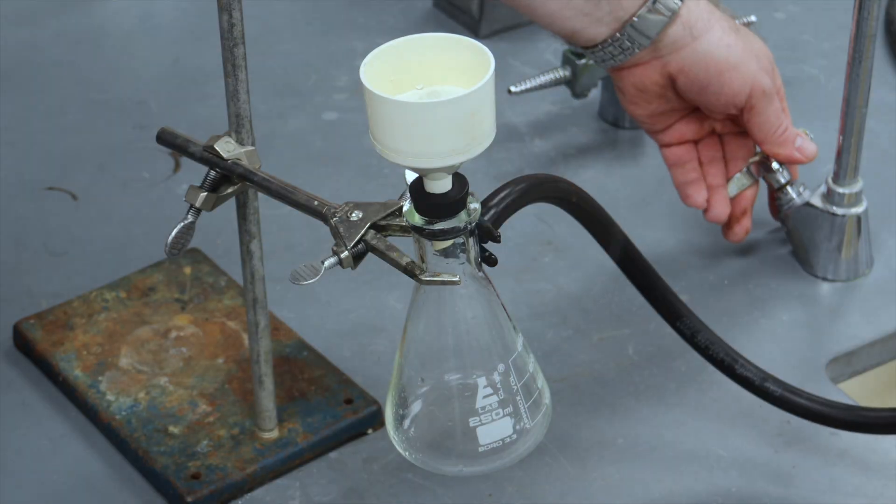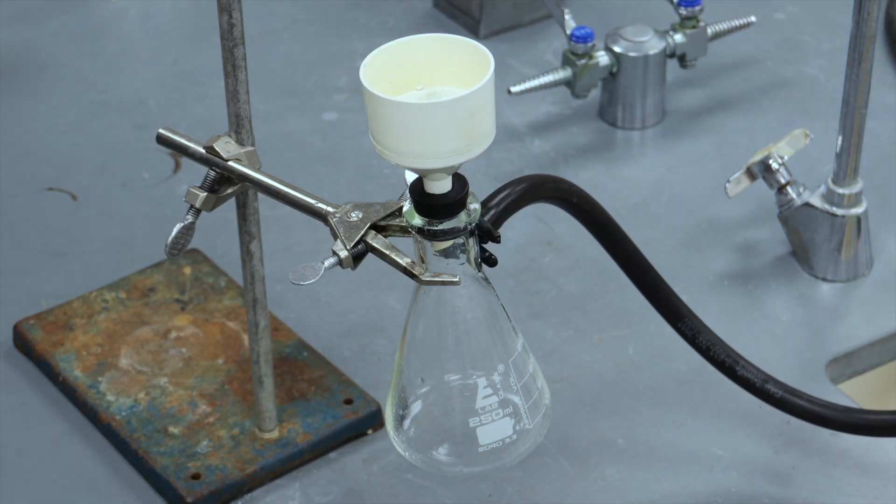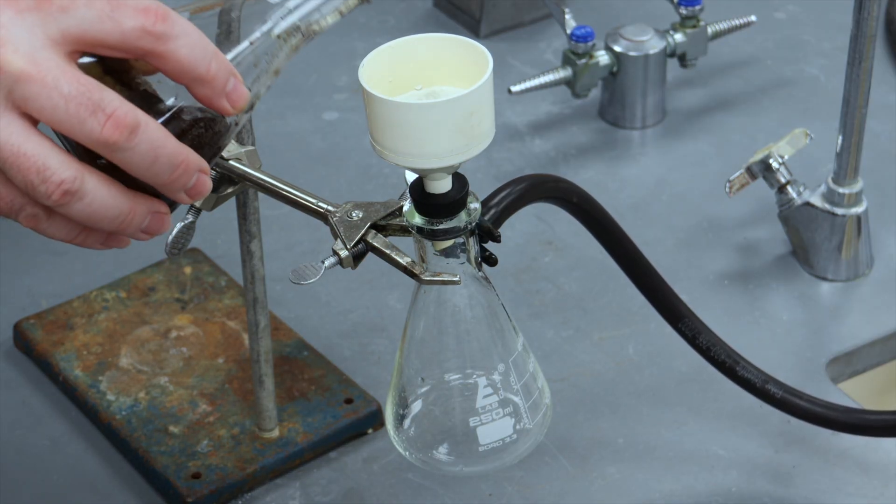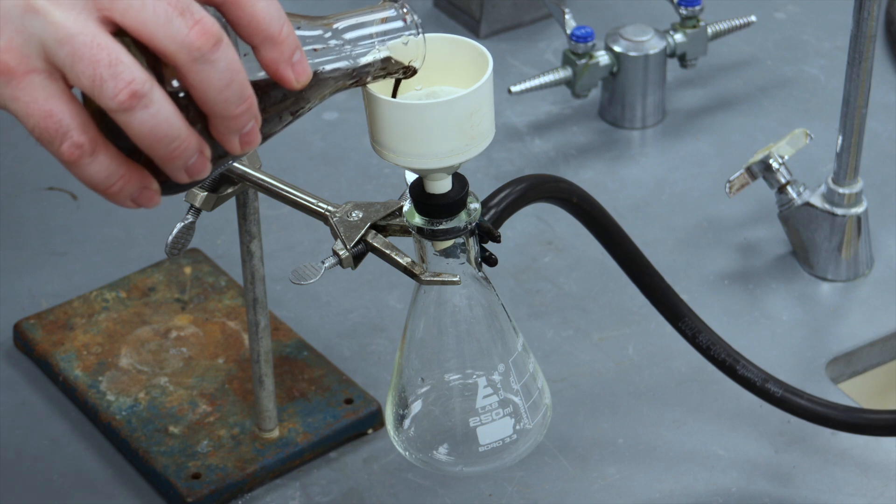Then, before you do your filtration, empty the vacuum flask of any solvent you collected. There shouldn't be any sea light in that liquid. Now, you're ready to do the filtration.